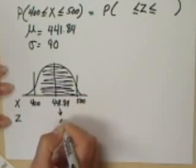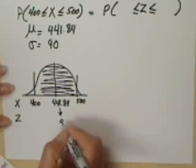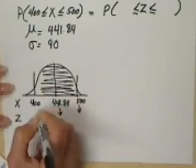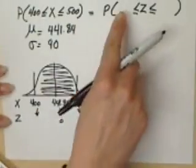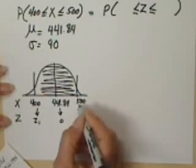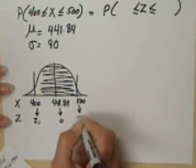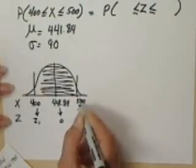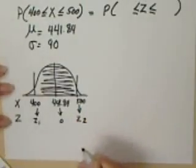To convert this to Z, we know the Z value mean is equal to 0. And let's figure out what the Z is associated with 400. I'll call that Z1. And let's see what the Z is associated with 500, which I will call Z2.